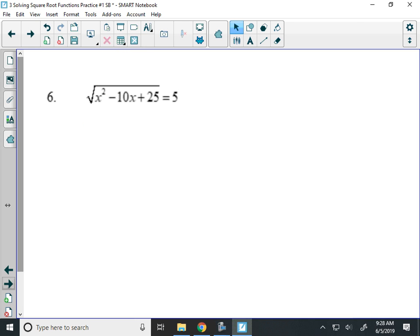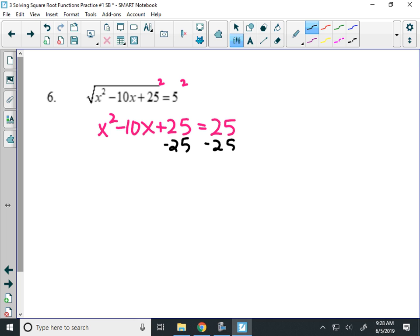Number 6. Isolate the square root. It is isolated, so I'm going to square both sides. x squared minus 10x plus 25 equals 25. This is like the last problem on our notes. Because what I'm going to do is subtract 25 from both sides, and those both go away. So I get x squared minus 10x equals 0. Both of those have an x, so I'm going to divide out an x, GCF, and get x times x minus 10.